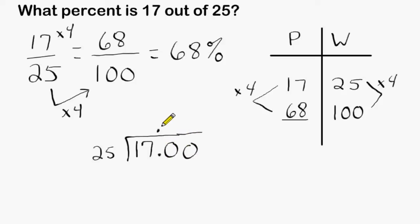25 fits into 17 6 times, and 6 times 25 is 150. Subtracting 150 from 170, we get 20, and we bring down the next zero in the hundredths place, and we divide 25 into 200, which is 8.